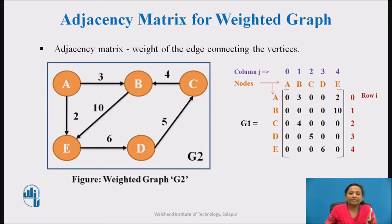The adjacency matrix for a weighted graph contains the weight of the edge connecting the vertices. Here is an example of an adjacency matrix for a weighted graph G2. Instead of a value 1, the weight of an edge is stored in the matrix cell representing the edge between the vertices. And if there is no edge, then the value 0 is used to represent no edge between those two vertices.